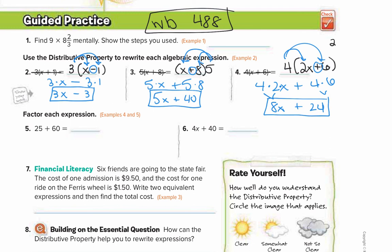One other type of problem you might come across involves different letters or variables. If you were to distribute this, you would get 2x plus 2y, and you would not be able to add those because they're different letters. So if you come across different letters, they cannot be added — you leave your answer as 2x plus 2y.